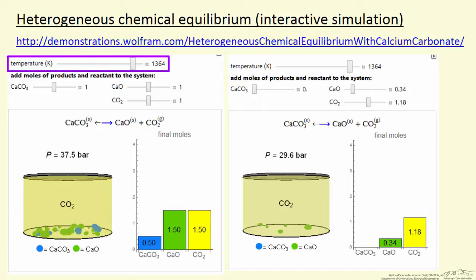We can change the temperature with this slider, and that's going to shift equilibrium to the right. We can add additional calcium carbonate, calcium oxide, or carbon dioxide.